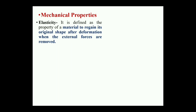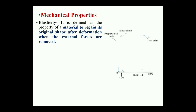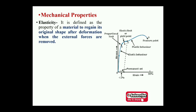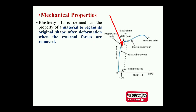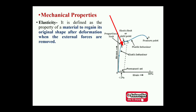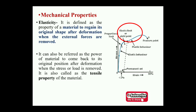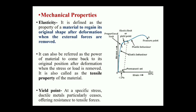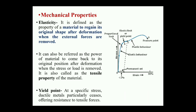Mechanical properties — elasticity is defined as the property of a material to regain its original shape and size after removal of the external force. On the stress-strain curve, by increasing stress up to point A — called the proportional limit — the material exhibits elastic behavior, meaning it can regain its original shape after removing the external force. Beyond point A to point B, the yield point, that is the maximum capacity of the material to sustain stress.